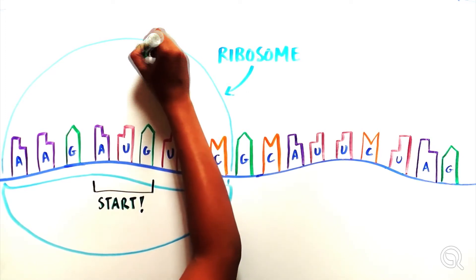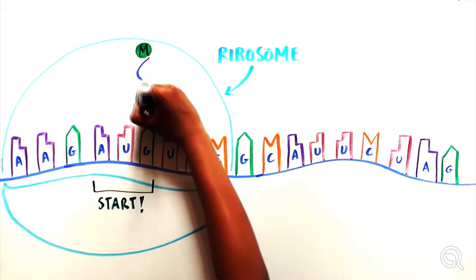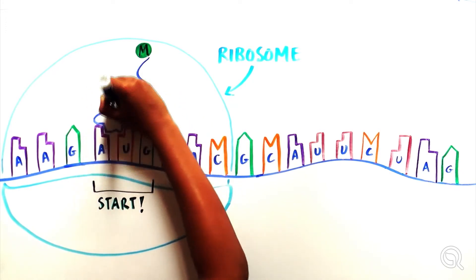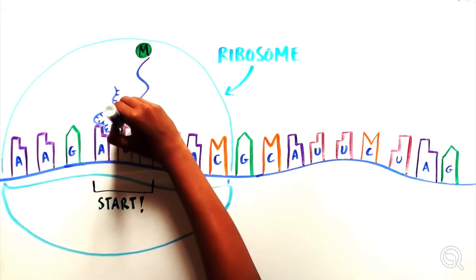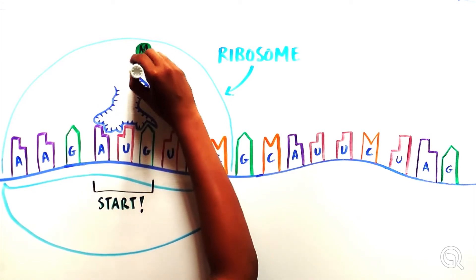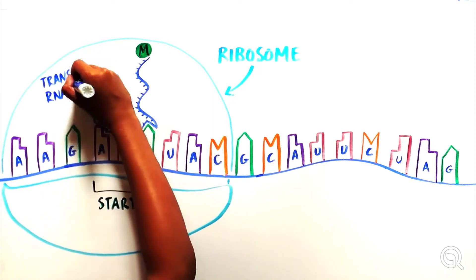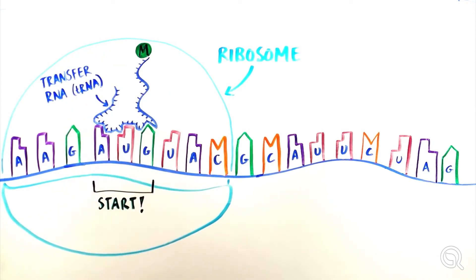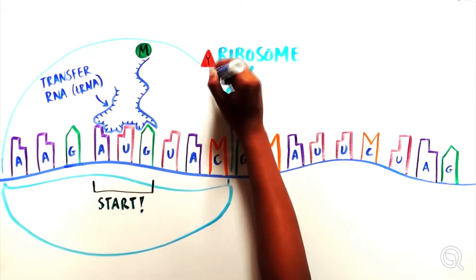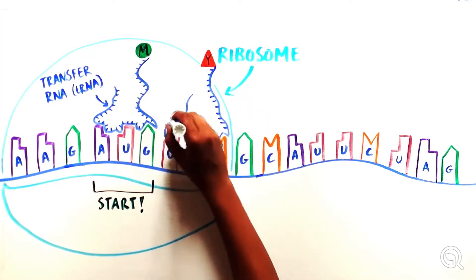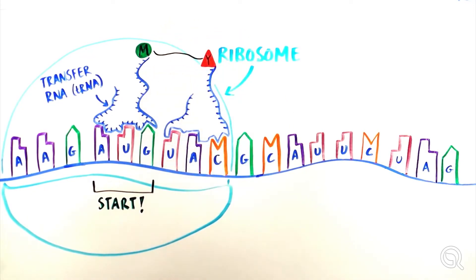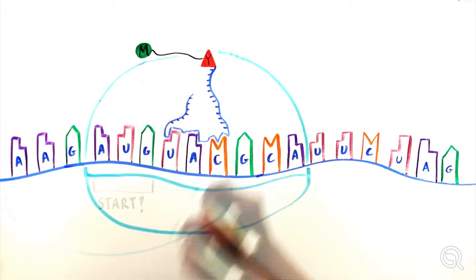In order to translate a codon into an amino acid, another kind of RNA called a transfer RNA, or tRNA, binds an amino acid on one end and matches up with the corresponding codon from the mRNA on the other end. When the tRNA brings the amino acid that matches the next codon in the mRNA, the amino acid attaches to the previous one, which starts the growing chain of amino acids.